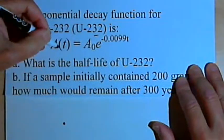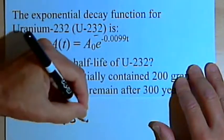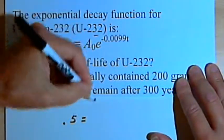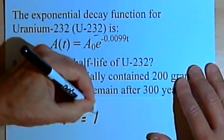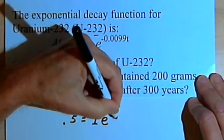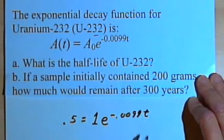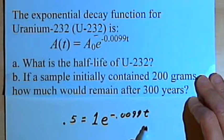So I'm going to have A(t), that's the amount I have at the end, is 0.5 equals A sub 0, that's the amount I'm beginning with, that's 1, times e raised to the negative point 0.0099t. I want to find out what the t is.